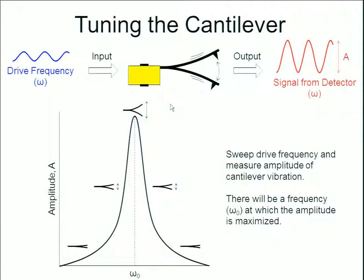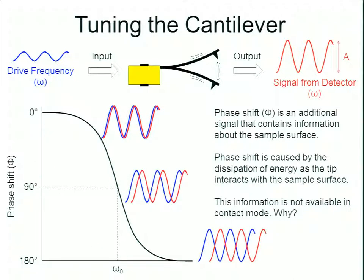Here's an image showing what it looks like when you're tuning the cantilever. You go through a range of drive frequencies until you get the maximum amplitude, and that's what you select as your drive frequency. Your computer compares that drive frequency to the output from the detector, and you'll observe a phase shift or amplitude change. The phase shift is one type of data you can get, and this information is not available in contact mode.